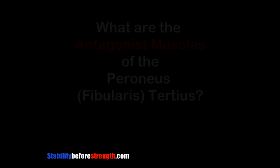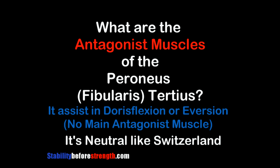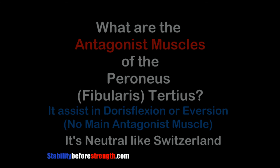Now let's find out the muscles that go against the movements of this muscle. Interestingly, since it both dorsiflex and everts the foot, it doesn't really have a main antagonist, because most other muscles perform either dorsiflexion or inversion, or plantarflexion or eversion — not both combined.